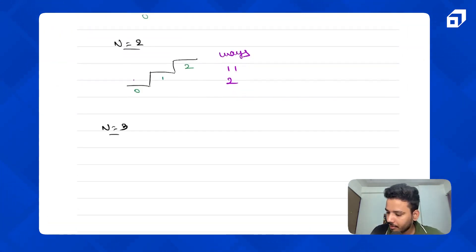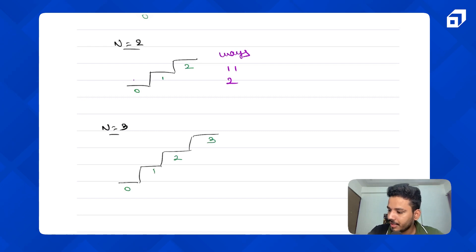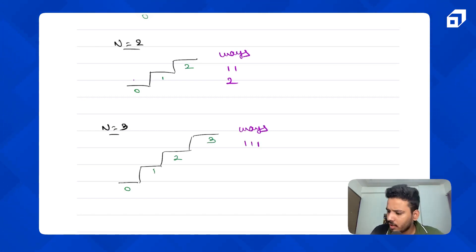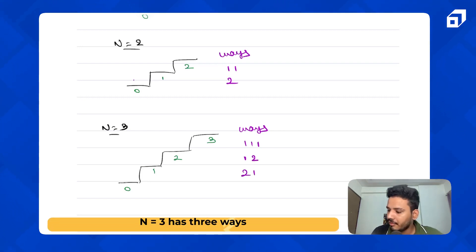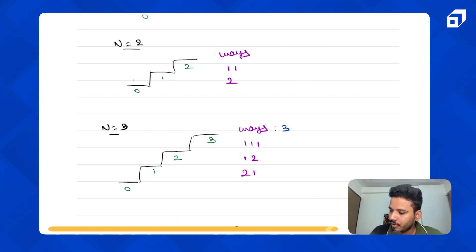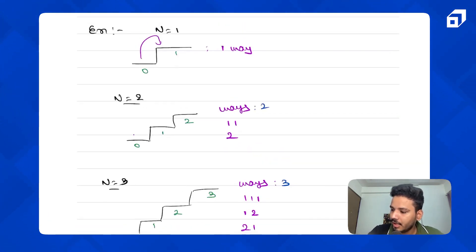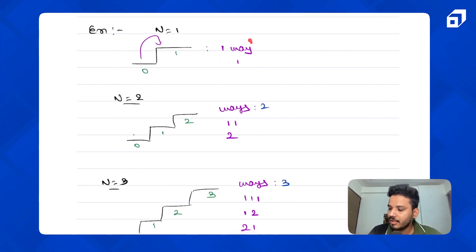For n equal to three, I have zero, first, second, and third step. The ways are: three one-length steps; a one-length step and a two-length step; or first a two-length step then a one-length step. Total ways are three. For n=2 we had two ways, and for n=1 we had only one way — simply take a one-length step.